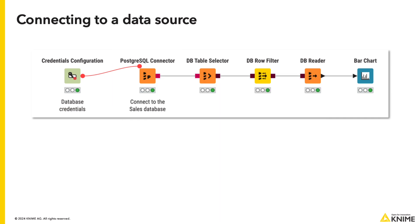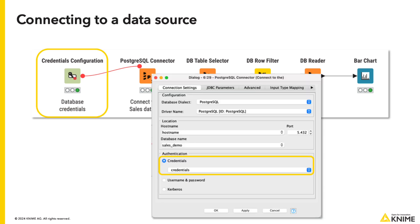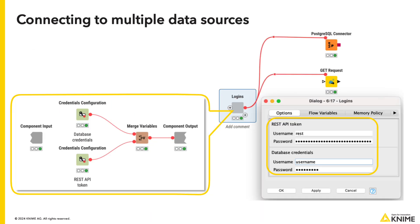A good way to manage logins within a workflow is to provide credentials once in the credentials configuration node, and then use the encrypted variable in all the nodes that need the credentials. If you need multiple connections, you can create a component with multiple credentials configuration nodes inside.